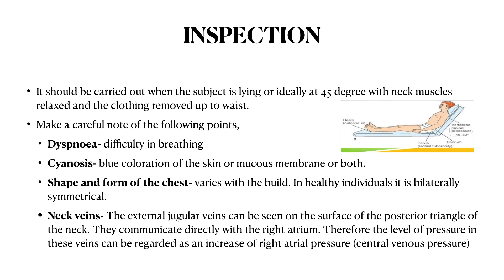In healthy individuals, the chest is bilaterally symmetrical. Then you have to see for the neck veins. The external jugular veins can be seen on the surface of the posterior triangle of the neck. They communicate directly with the right atrium. Therefore, the level of pressure in these veins can be regarded as an indicator of right atrial pressure, or we can also say central venous pressure.